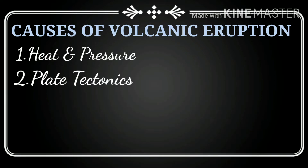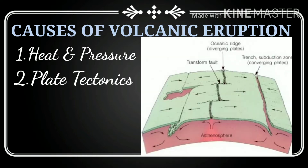Plate tectonics: most volcanic eruptions take place near plate margins. The earth's crust is made up of a series of movable plates. When these plates slide past each other or collide against each other due to intense heat inside the earth's core, their edges produce faults along the lines of weakness. It is along these plate boundaries that the crust is weakened and through which the hot magma gushes out, leading to volcanic eruptions. The same forces that cause earthquakes also cause volcanic eruptions.